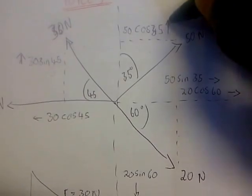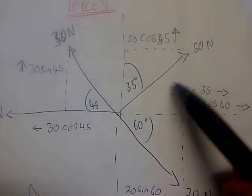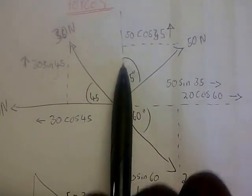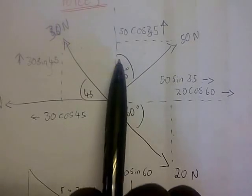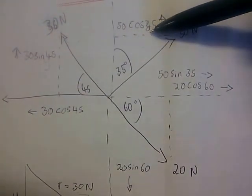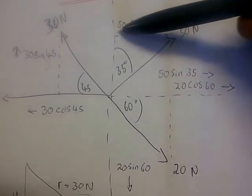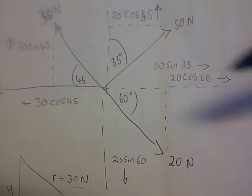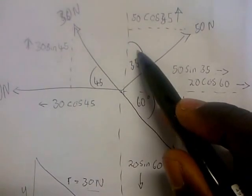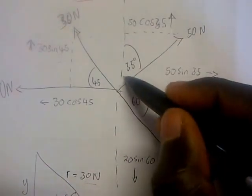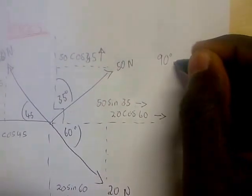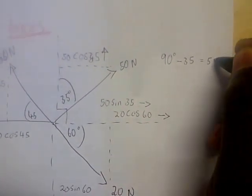The vertical component, 50 cos 35, is pointing upward. So if we resolve all forces in this right-angle triangle, the adjacent side is 50 cos 35 and the horizontal side is 50 sin 35. If you have a problem with this diagram, you can subtract: since the right angle is 90°, the other angle is 90° − 35° = 55°.